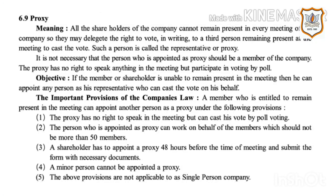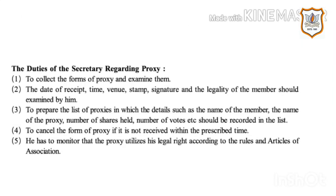The important provisions of company law regarding proxy: A member entitled to remain present in the meeting can appoint another person as proxy under the following provisions. First, the proxy has no right to speak in the meeting but can cast his vote by poll voting. Second, the person appointed as proxy can work on behalf of members, but should not represent more than 50 members. Third, a shareholder has to appoint a proxy 48 hours before the time of the meeting and submit the form with necessary documents. Fourth, a minor person cannot be appointed as proxy. Fifth, the above provisions are not applicable to a single person company.